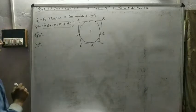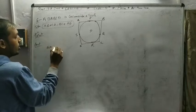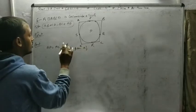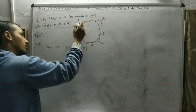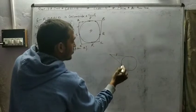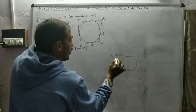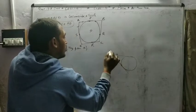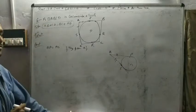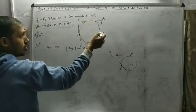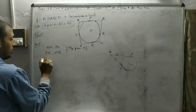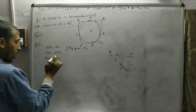Let us see. If I say AP is equal to AS — tangent from A — tangents from external points are always equal. From an external point, if two tangents are drawn, these two are equal. So AP equals AS. Same way, PB equals BQ, and DR equals DS.